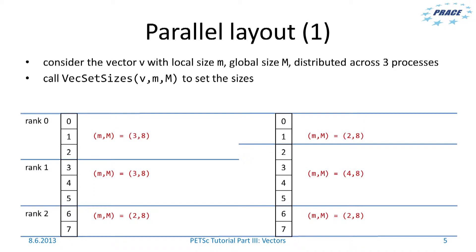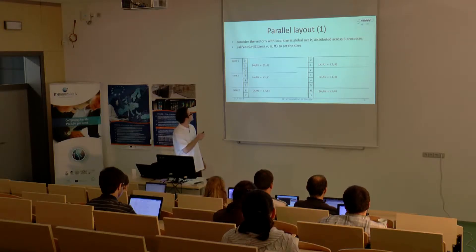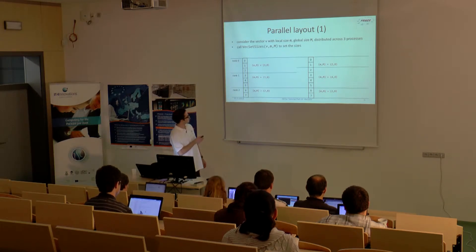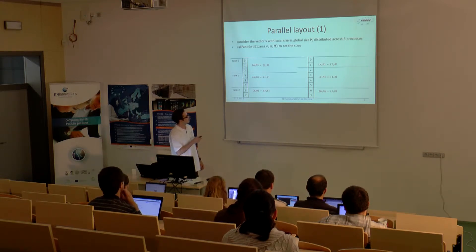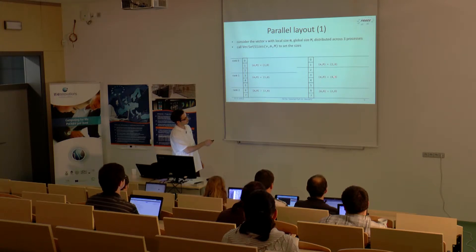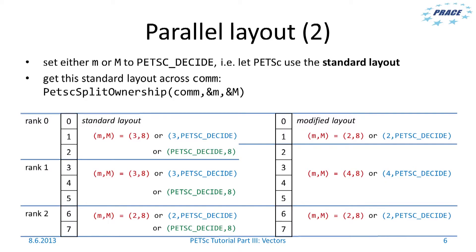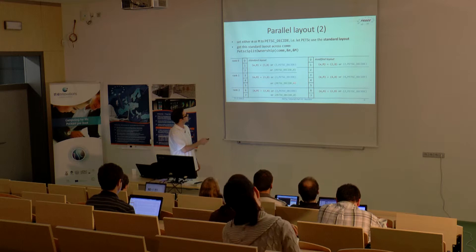You can set the parallel layout of your vector in this way. Consider a vector with local size small n and global size uppercase M, distributed across three processes. You call VecSetSizes to set the sizes. Here we have two situations: one where we have local sizes 3, 3, and 2, and on the right side local sizes 2, 4, and 2. You can also set either lowercase m or uppercase M to PETSC_DECIDE, which means PETSc uses the so-called standard layout shown on the left side.